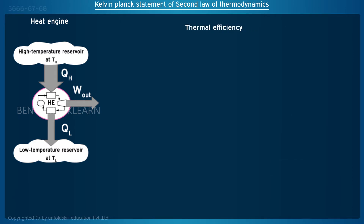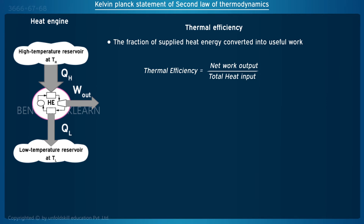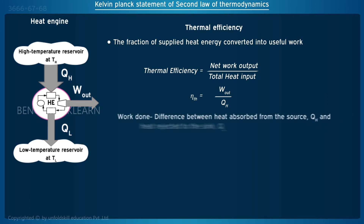Thermal efficiency. A term called thermal efficiency is used to refer to the fraction of total heat energy converted into useful work. The thermal efficiency is equal to net work output divided by total heat input, and it is denoted by eta (η). Eta is equal to work output divided by QH. The work done is the difference of heat absorbed from the source QH.